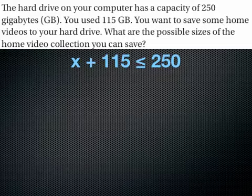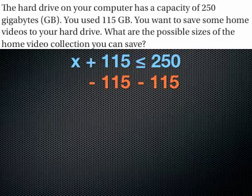To solve for x or to get x by itself, I need to subtract 115 from both sides. When I subtract 115 from both sides, I get x ≤ 135 gigabytes.